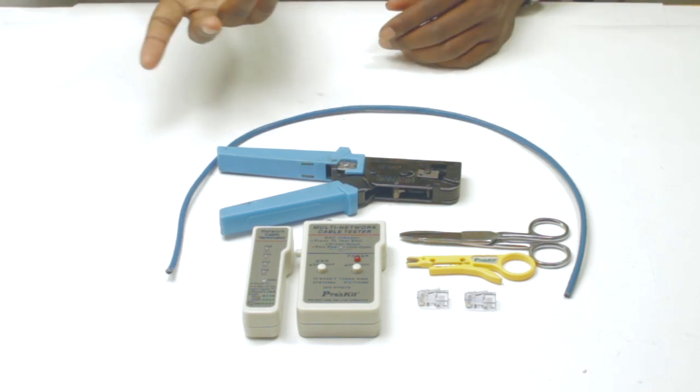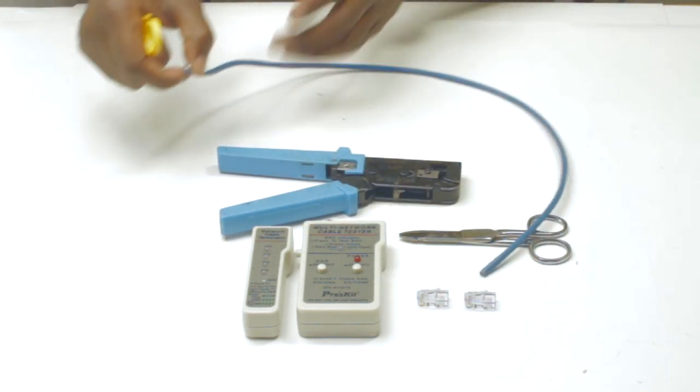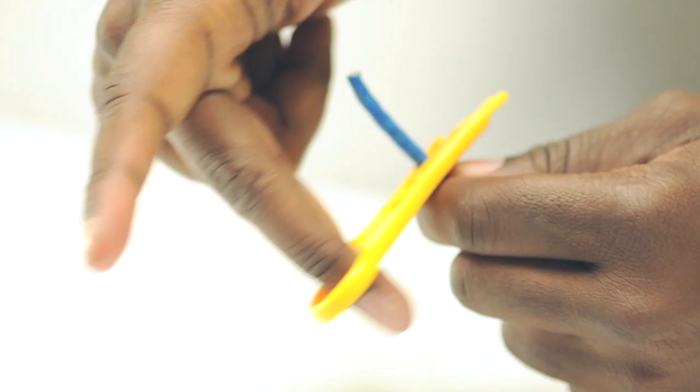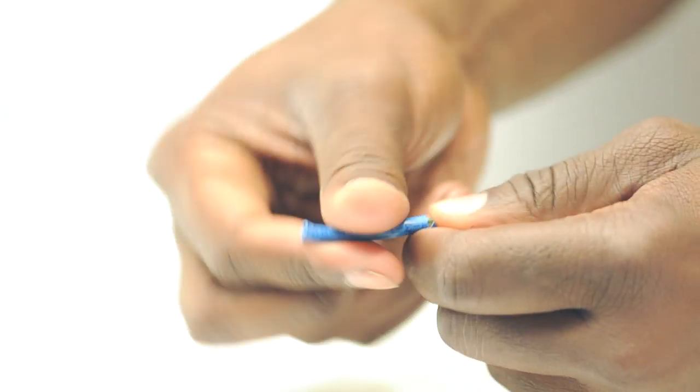The first step is to remove the jacket. Taking the strip tool, I simply rotate it around the outside of the jacket. This slices the jacket and makes it easy to pull off.